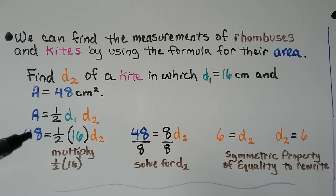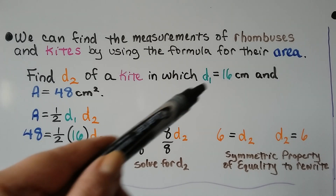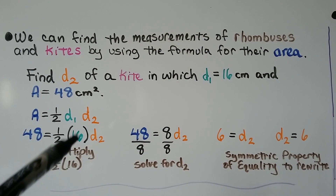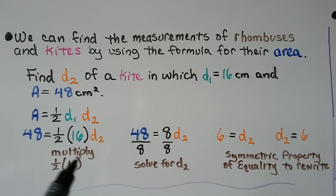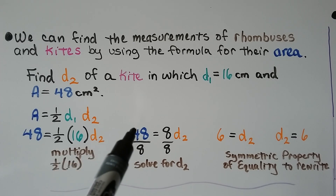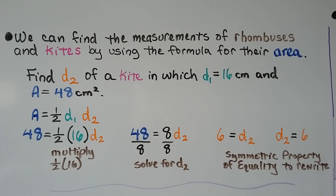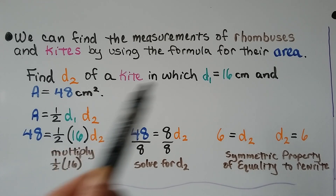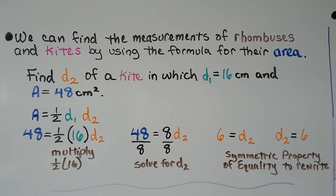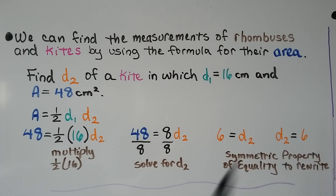We know the area is 48, so we have 48 equals half times 16 times d2. We multiply the half by 16 to get 8, giving us 48 equals 8d2. Dividing both sides by 8, we get 6 equals d2. So the second diagonal is 6 centimeters. We can use the symmetric property of equality to rewrite it so d2 is on the left and 6 is on the right.